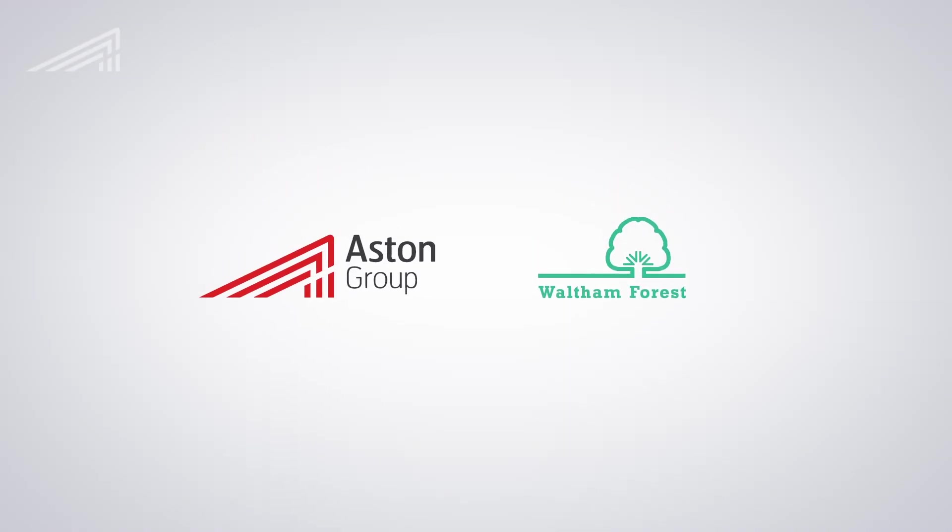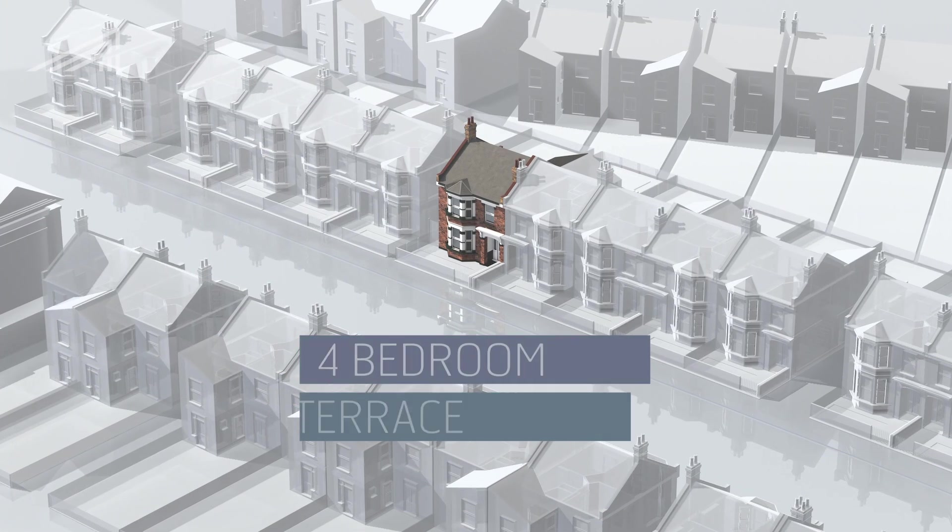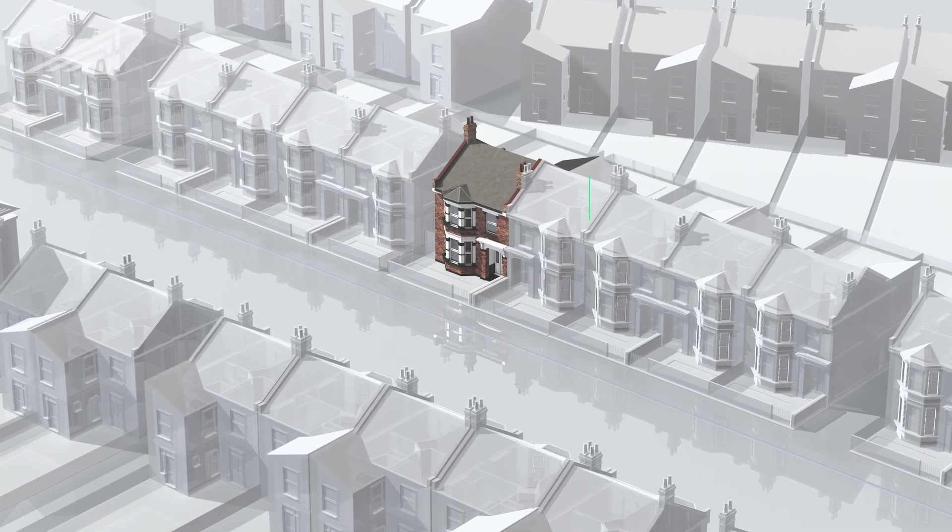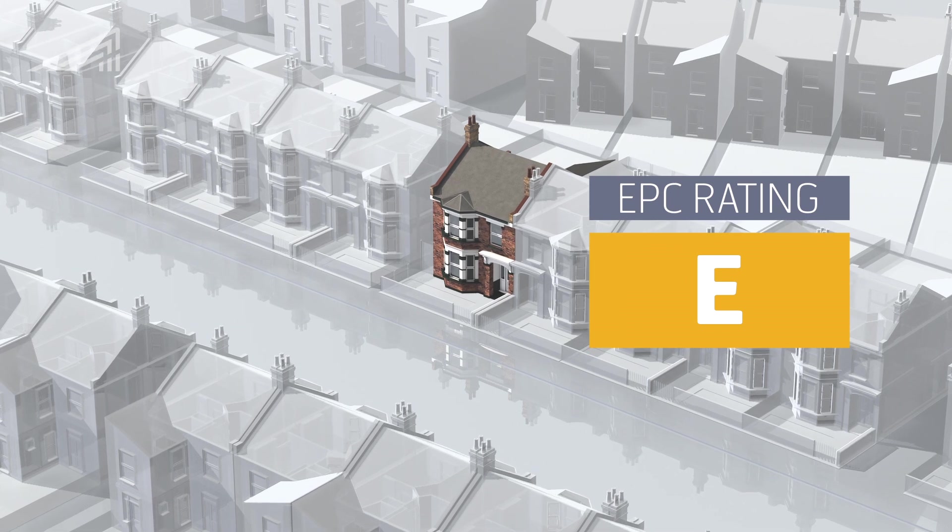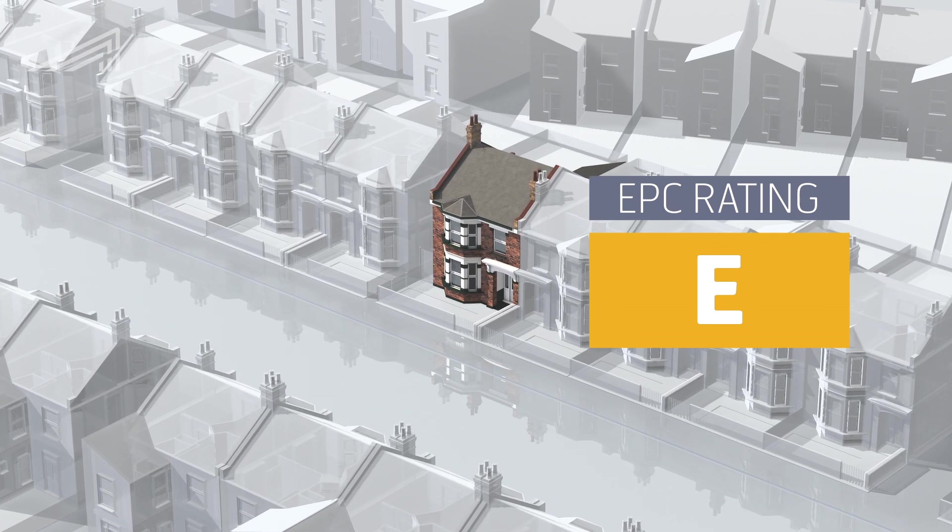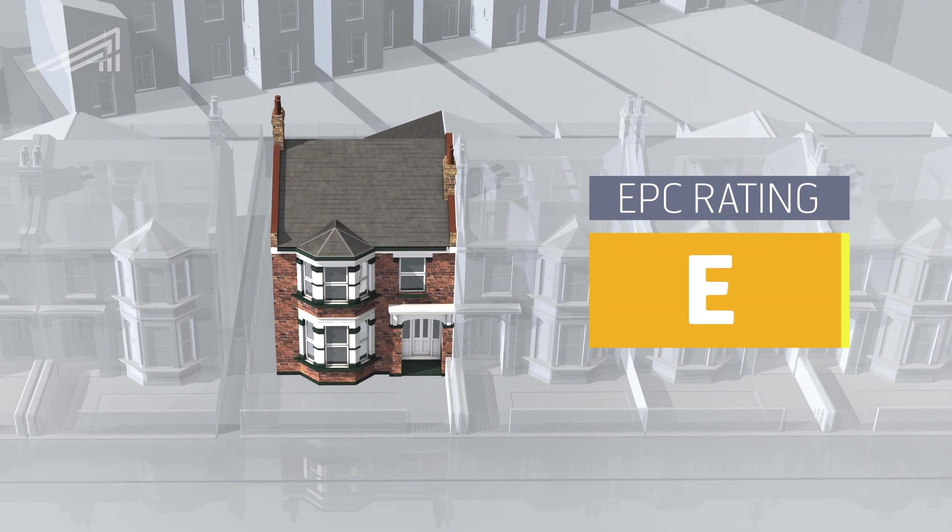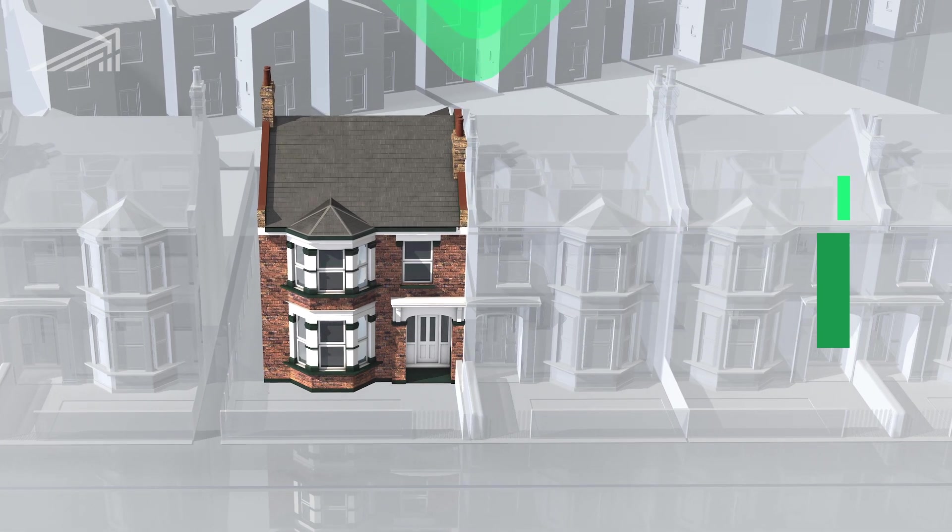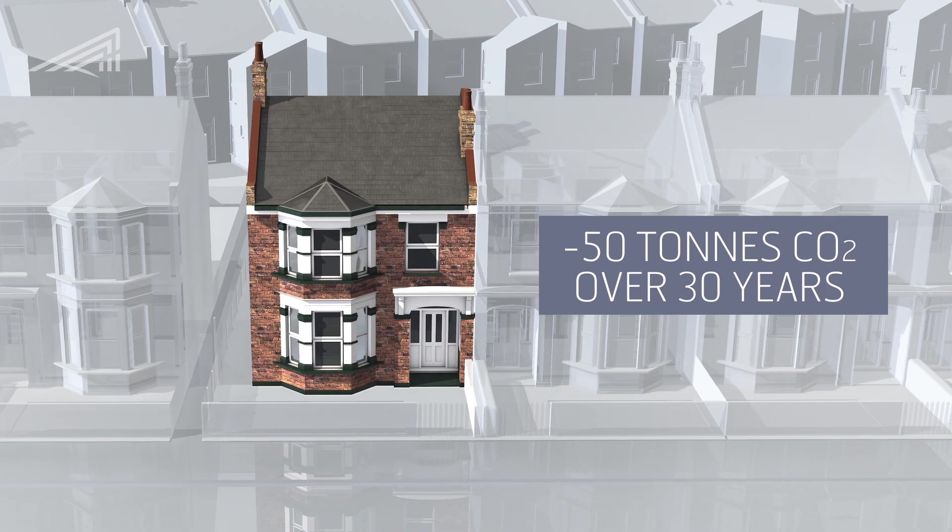Aston Group, alongside the London Borough of Waltham Forest, have been developing the first retrofit property in the borough. It's a four-bedroom, end-of-terrace Victorian property, and it had an EPC rating of E before we started work. Its energy inefficiency reflected its age. The challenge we set ourselves was to improve the EPC rating to a band A, while reducing the property's carbon usage by approximately 50 tonnes of CO2 over 30 years.